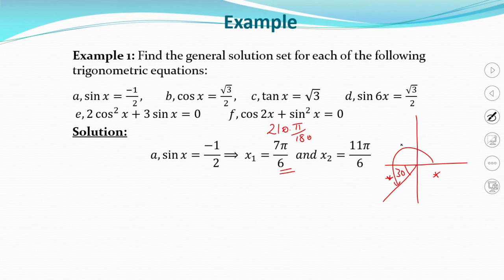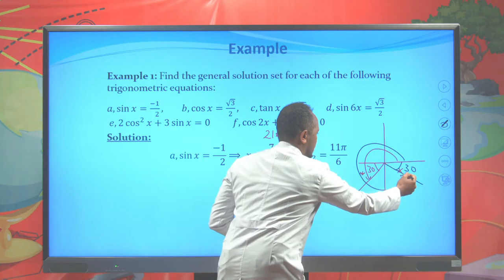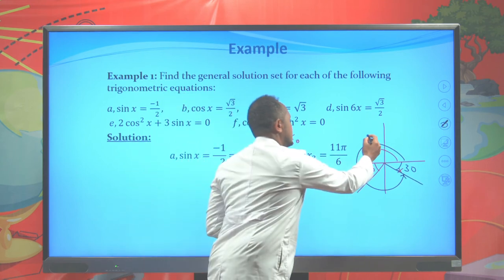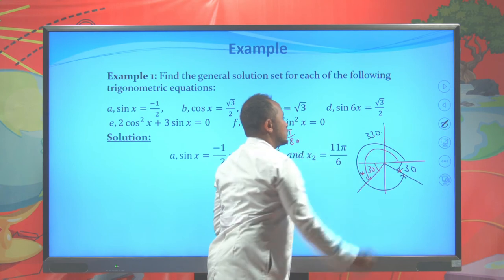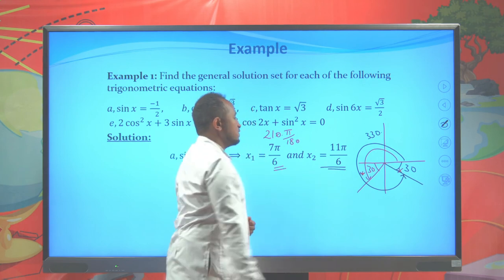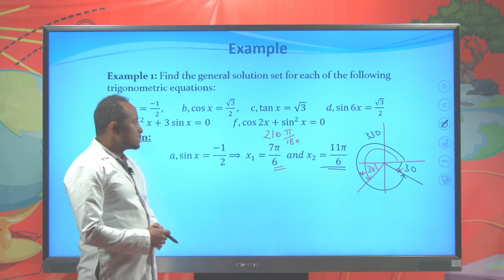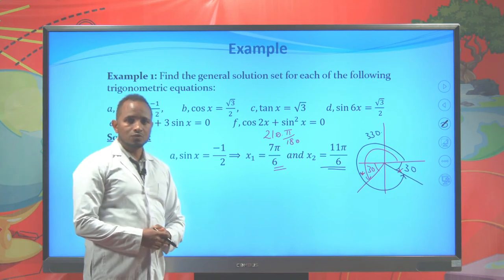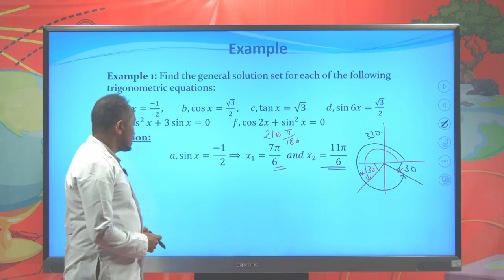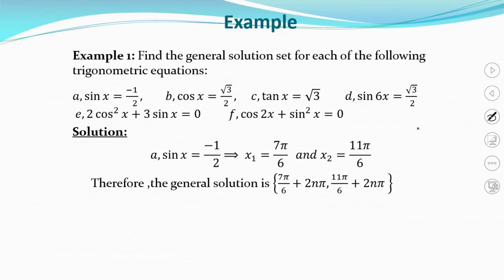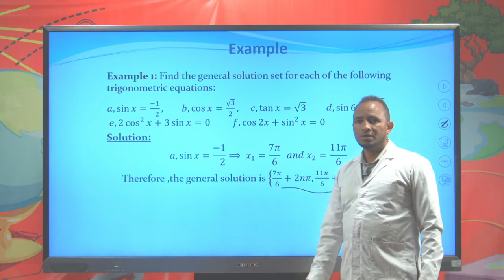The fourth quadrant angle has the same reference of 30°, giving 330°. Converting 330° to radians: 11π/6. So x₁ = 7π/6 and x₂ = 11π/6 are particular solutions for sin(x) = −1/2 on [0, 2π]. Therefore the general solution is: 7π/6 + 2nπ, 11π/6 + 2nπ.